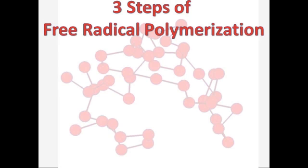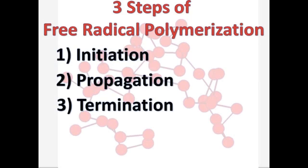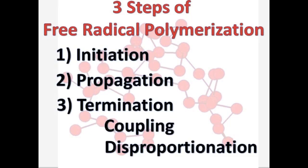Free radical polymerization can be broken down into three steps: initiation, propagation, and termination. We will cover two methods of termination: by coupling and by disproportionation.